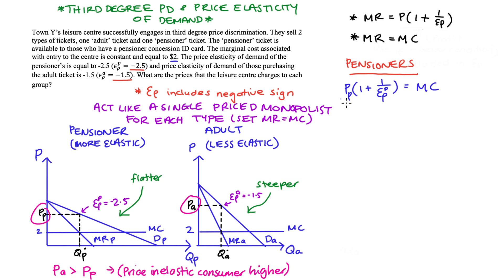I'm going to rewrite my profit maximizing condition. Marginal revenue is equal to marginal cost, but I'm going to just substitute that alternative formula in for marginal revenue. So I have price and I'll just use p subscript p, that's the price for the pensioners, times one plus one over epsilon p superscript p. That's all equal to marginal cost. I'm then going to substitute in all the values from the question. So I put in our negative 2.5 for that epsilon p superscript p and marginal cost is equal to two.